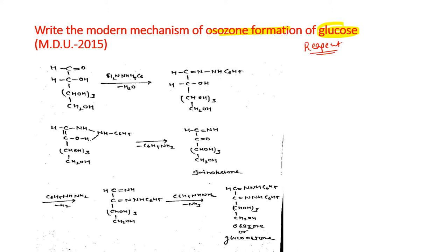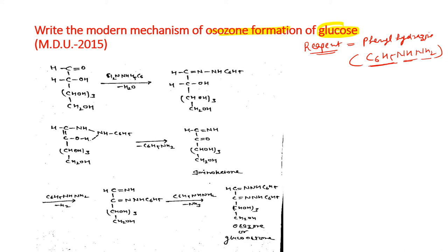The reagent used is phenylhydrazine, C6H5NHNH2. Remember that phenyl means C6H5, and hydrazine is NHNH2. When NHNH2 is attached to a benzene ring, one hydrogen is removed, giving us C6H5NHNH2.